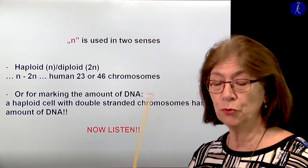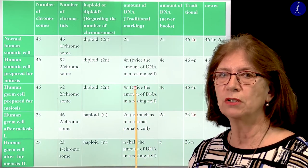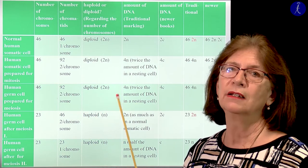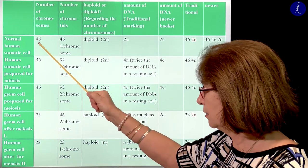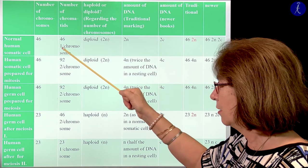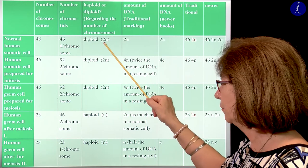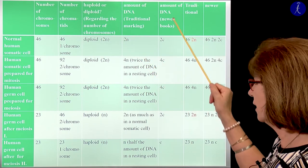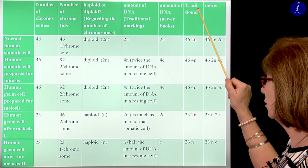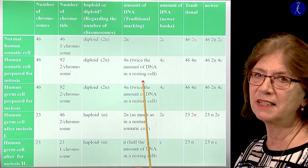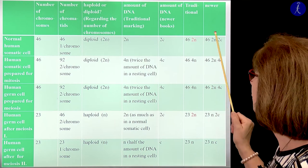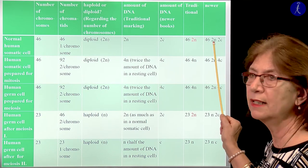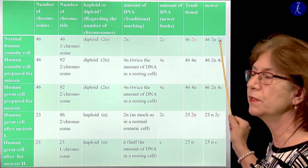Not many books use this newer marking, but some newer books already use it so that we can distinguish when N means haploid/diploid and when it means the amount of DNA. In a normal human somatic cell we have 46 chromosomes with one chromatid per chromosome — this is a diploid cell marked with 2N. The traditional DNA marking is also 2N in this case. In the newer marking, instead of this N for the DNA amount, we use a C. So the traditional marking for this cell is 46, 2N; but with the newer marking we could say 46, 2N, 2C — where 2N means it's a diploid cell and 2C marks the amount of DNA in the case of single-stranded chromosomes.